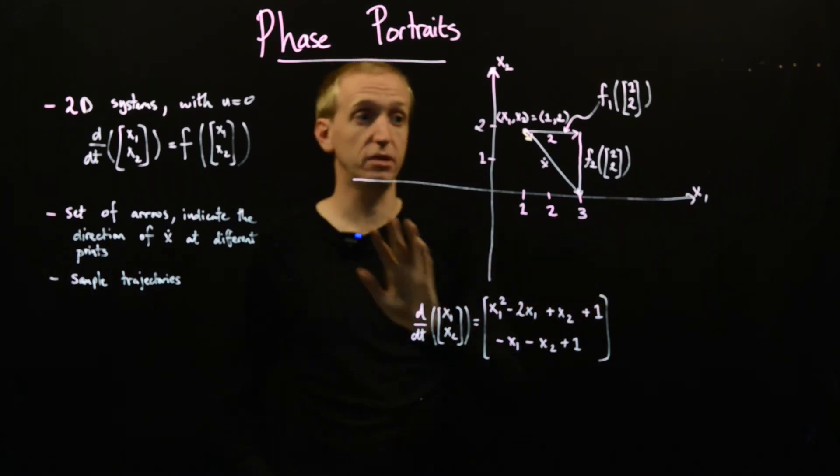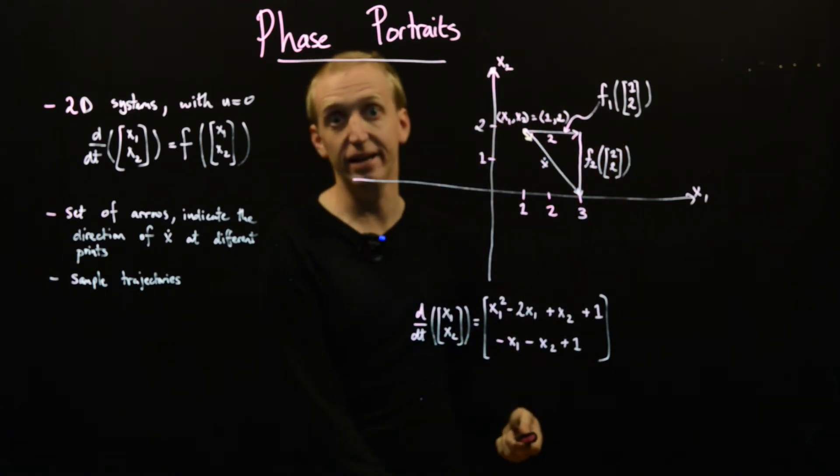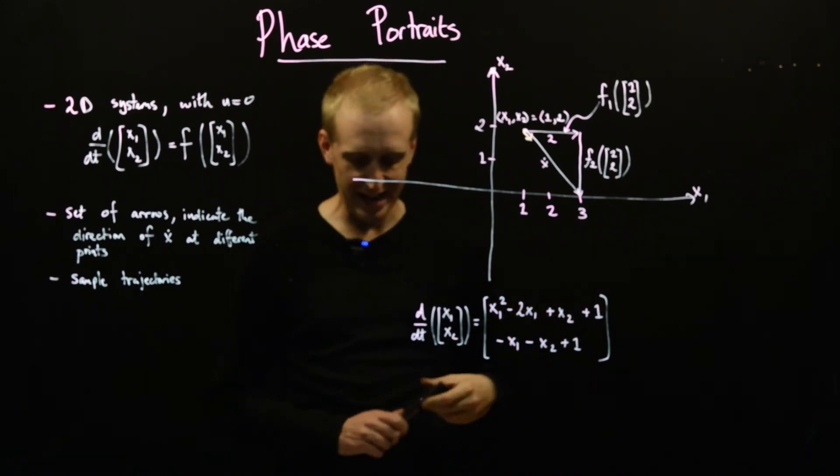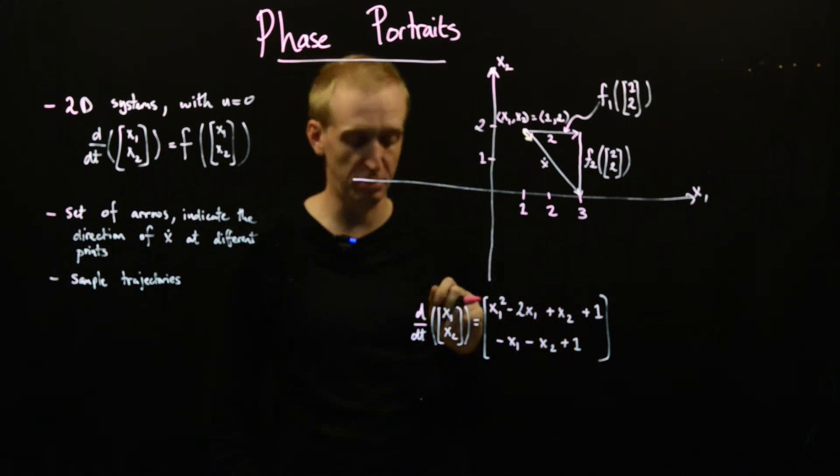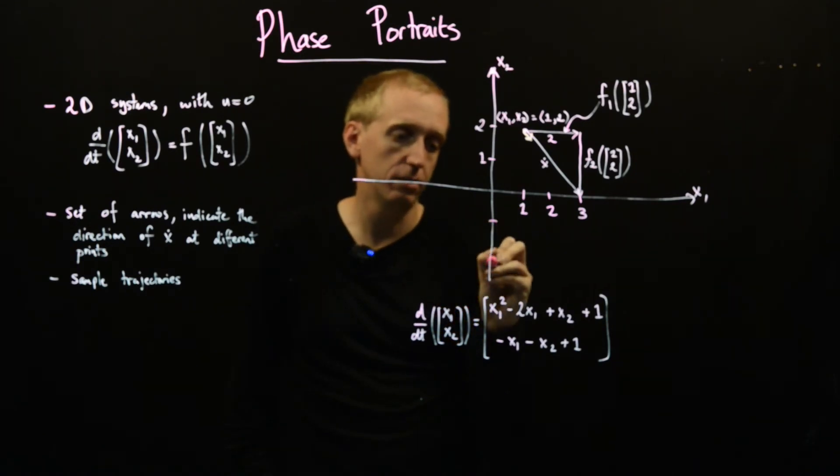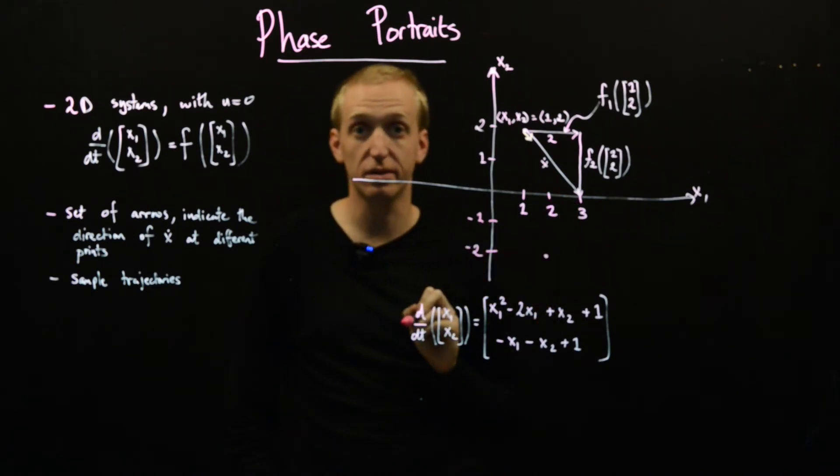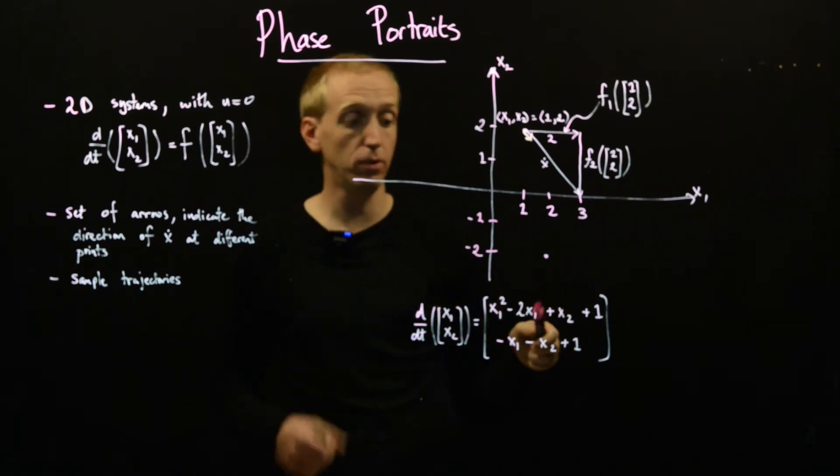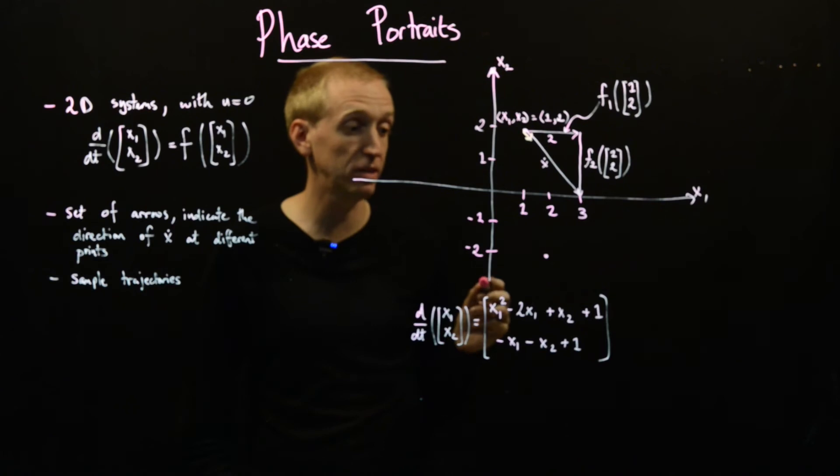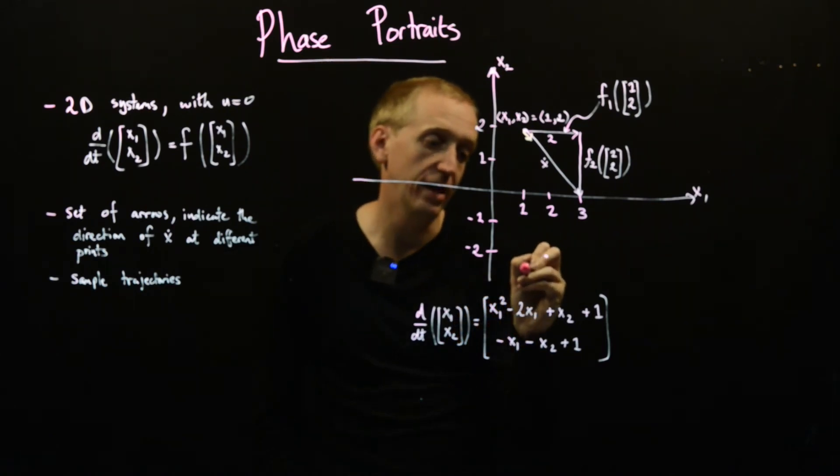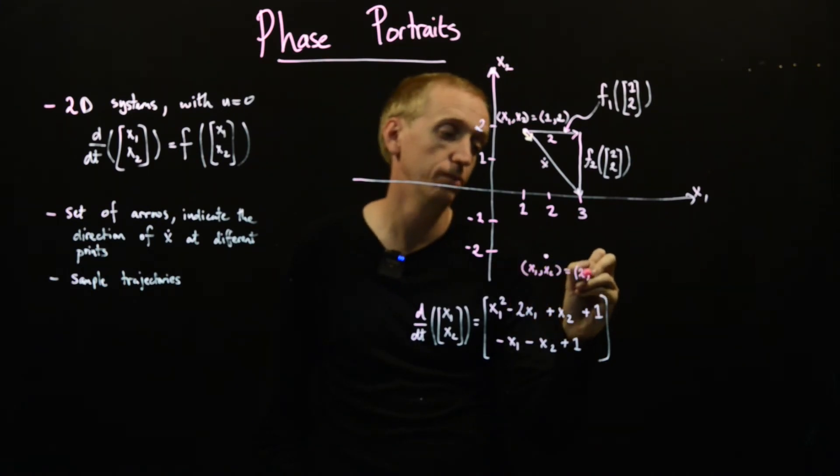And a phase portrait just consists of doing this for lots and lots of different points. Typically, you would do it on a fine grid. And of course, you wouldn't do this by hand, you would get a computer to do it. But we like doing things by hand. So let's just do another point, for example, and then I'll draw on a few more points corresponding to different points in the state space. So let's just take, for example, this point down here. So what is x dot evaluated at that point? Well, we just do exactly what we did before, substitute the values of our points into f1 and f2, draw on the components, and that will give us the vector corresponding to x dot.